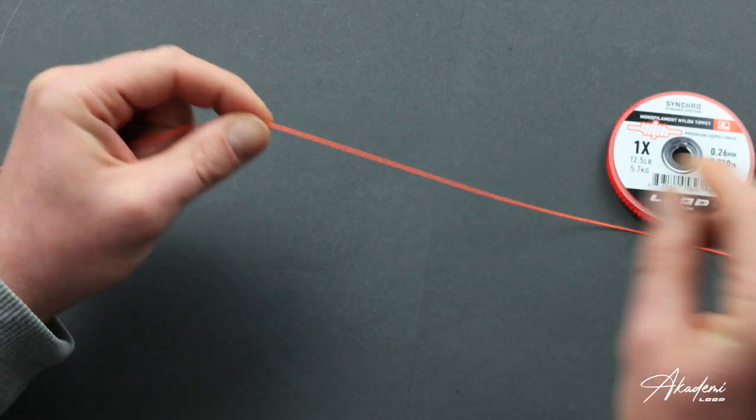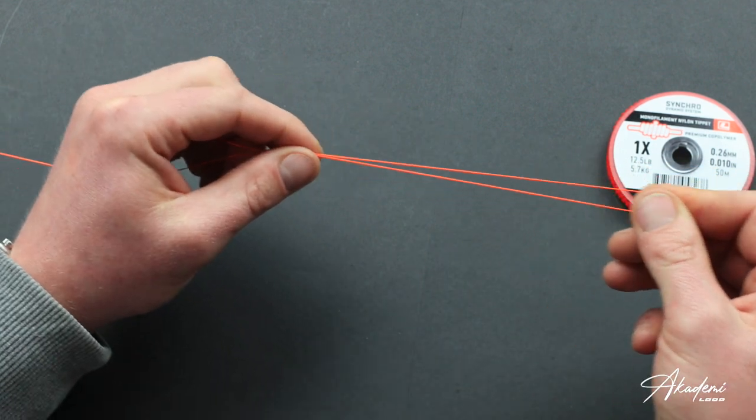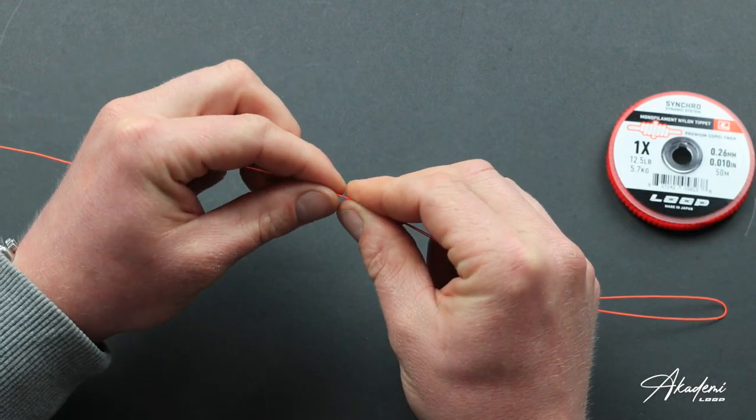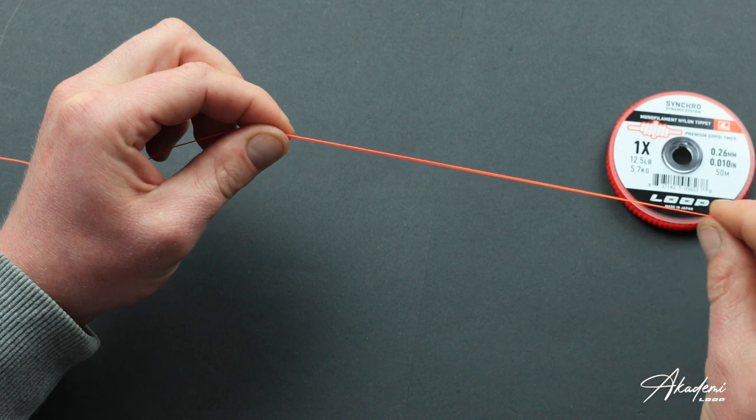First we'll take six to eight inches and we'll fold it back on itself like so. By pinching the back end, hold that with my left hand and strip my right hand up to the top.